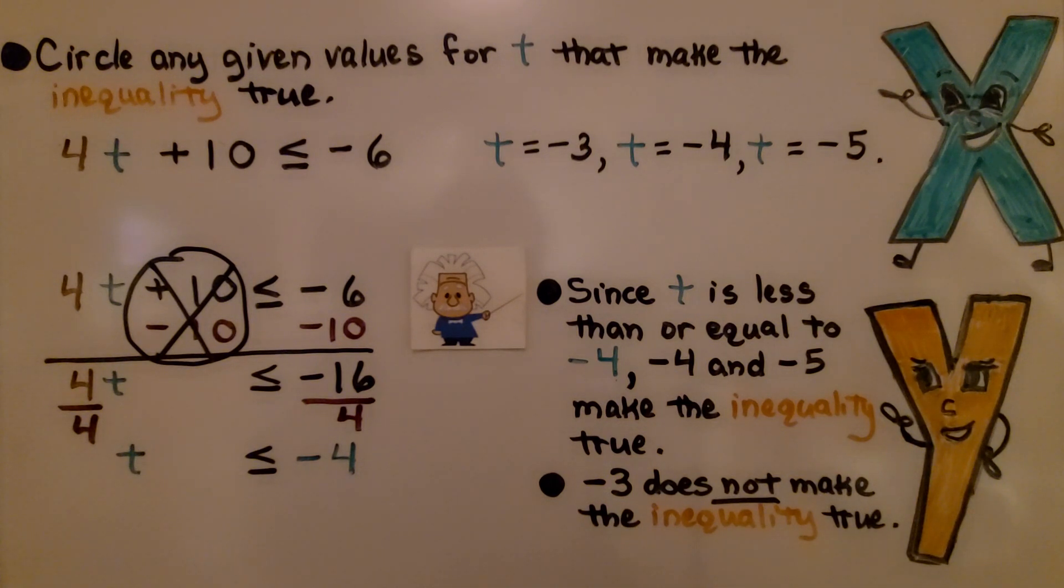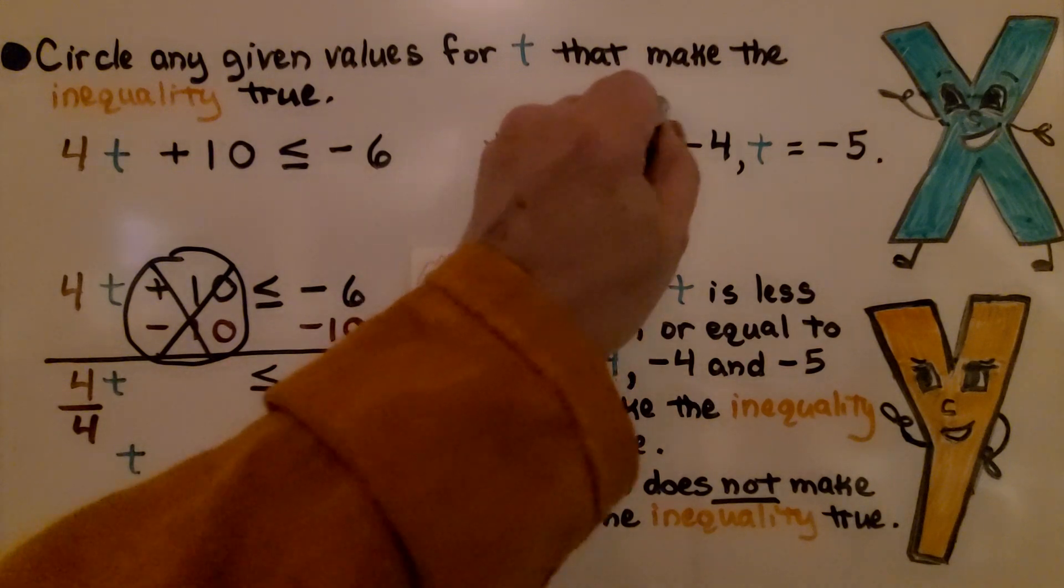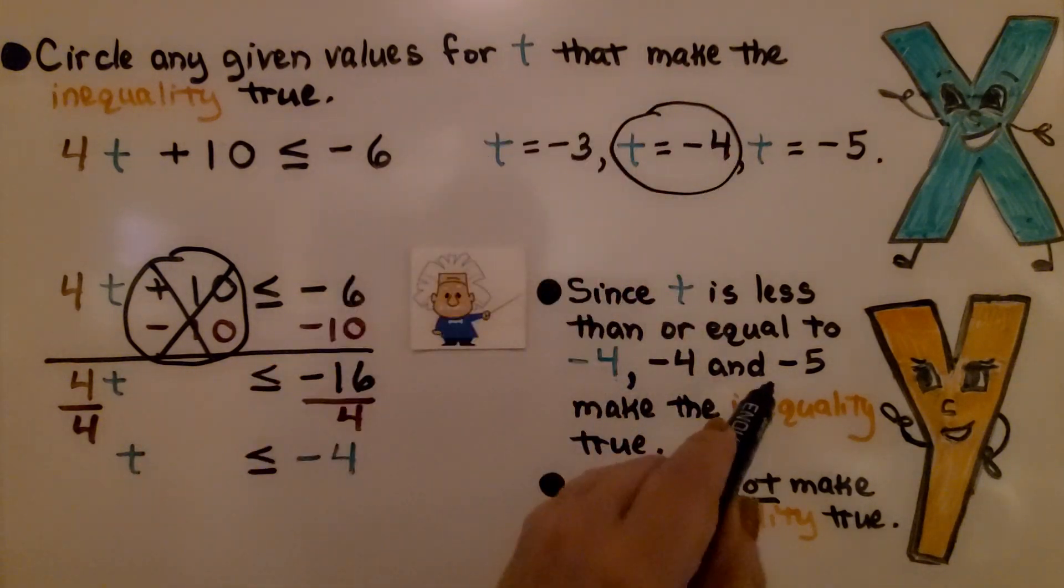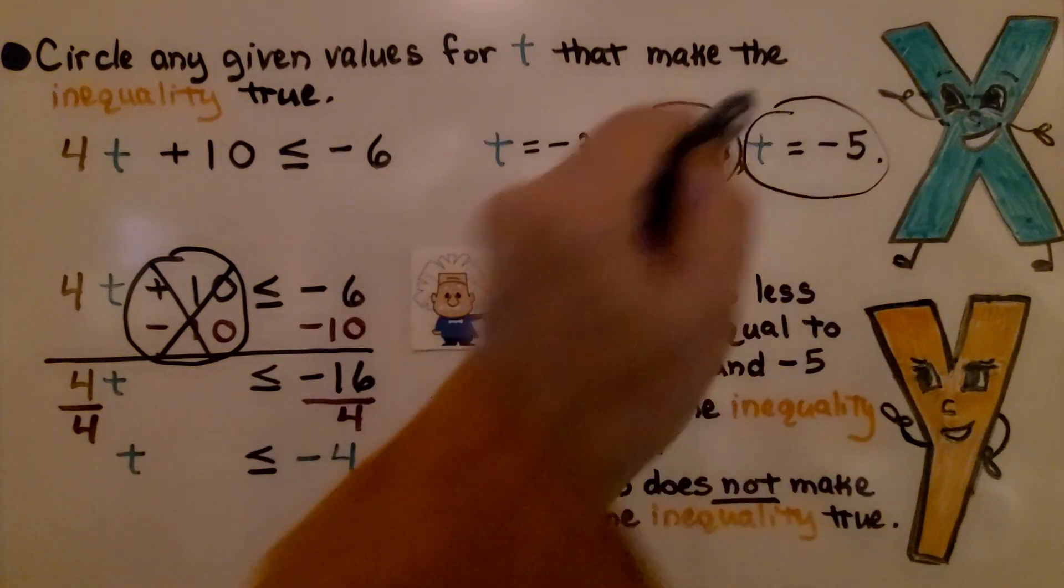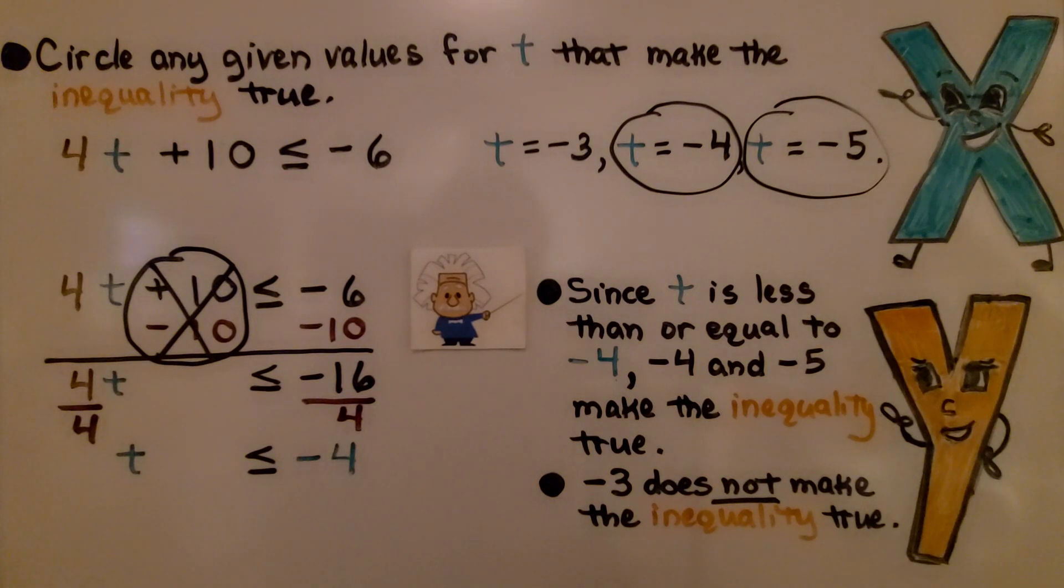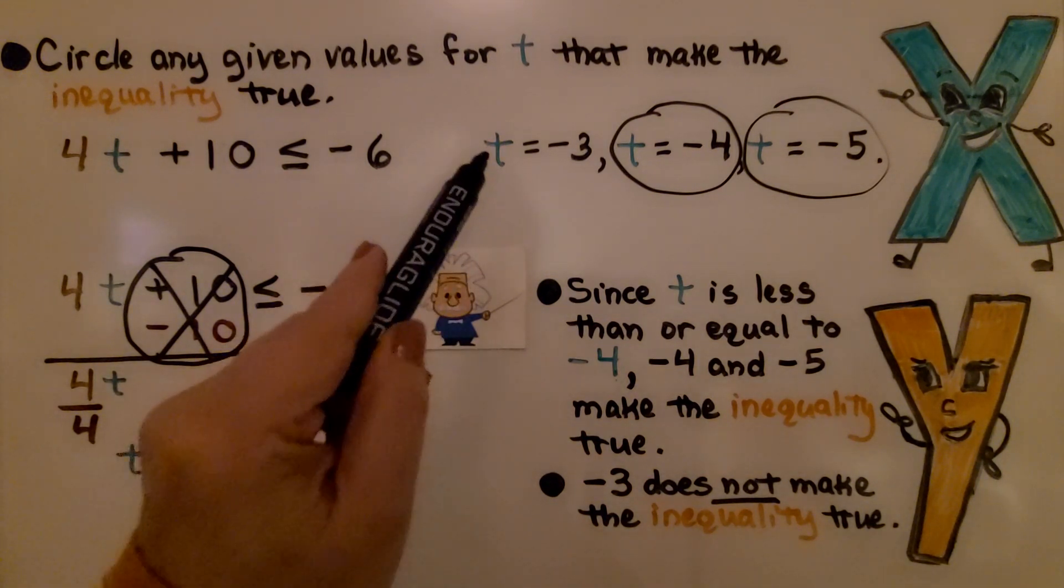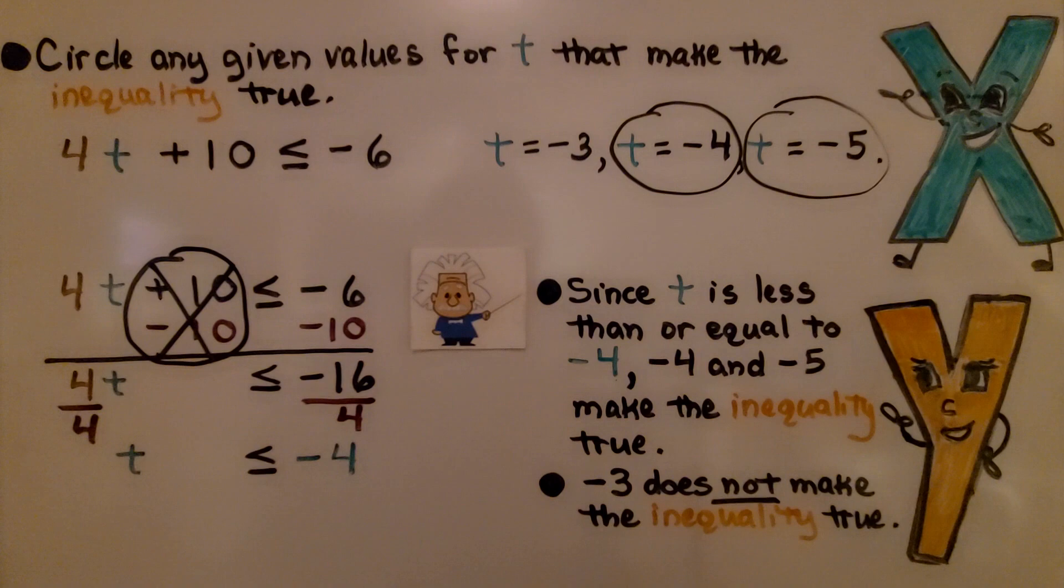Since t is less than or equal to negative 4, negative 4 and negative 5 make the inequality true. Negative 3 does not make the inequality true.